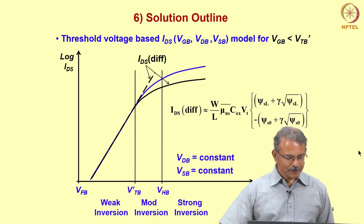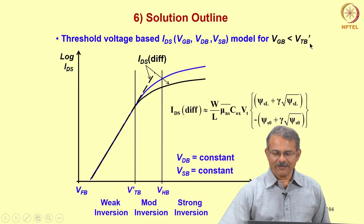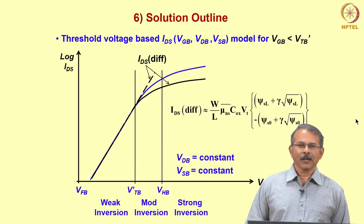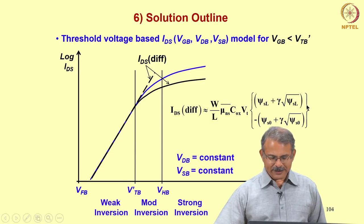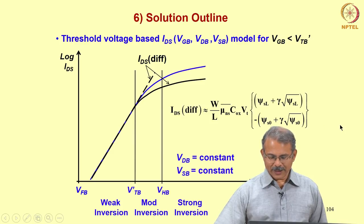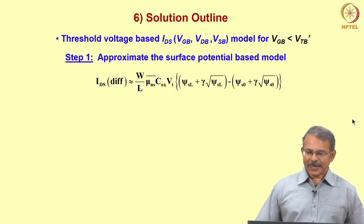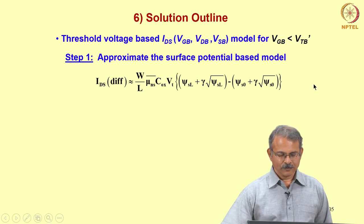This is our starting expression based on the surface potential-based model for the drain-to-source current. We need to approximate this expression so that we can express this part in terms of gate-to-bulk voltage, drain-to-bulk voltage, and source-to-bulk voltage. Let us write this expression and create some space to do the derivation.